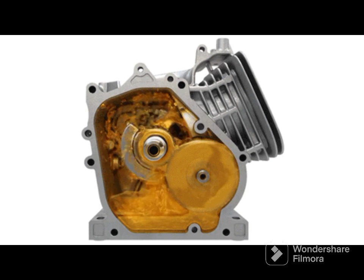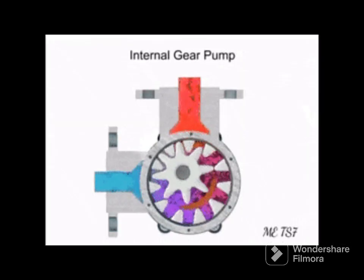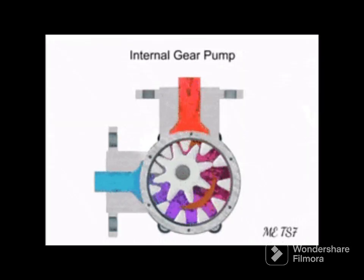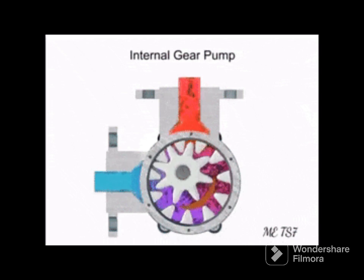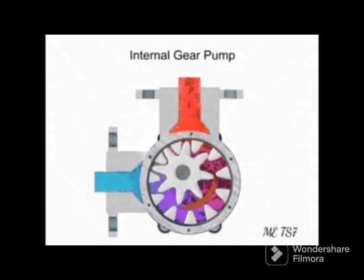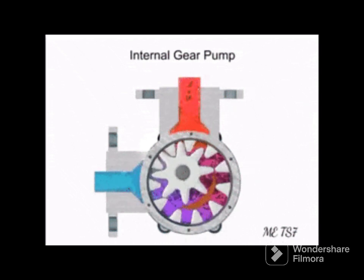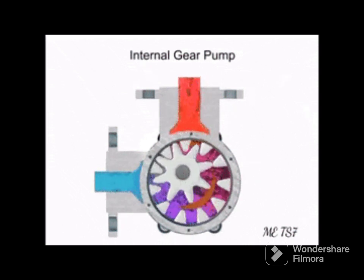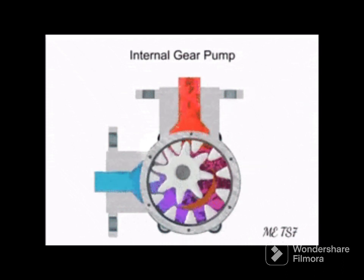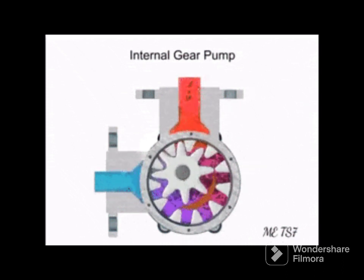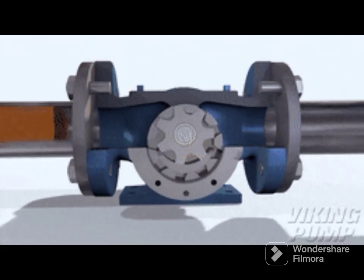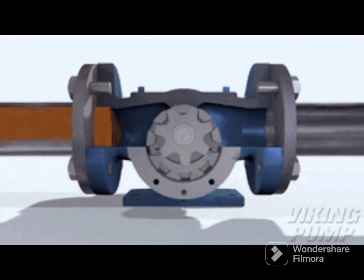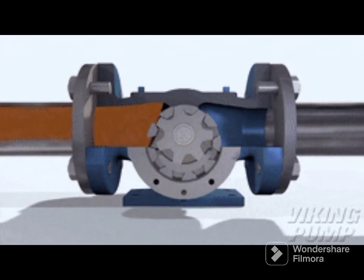Three: oil pump. The oil pump is an internal combustion engine part that circulates engine oil under pressure to the rotating bearings, the sliding pistons, and the camshaft of the engine. This lubricates the bearings, allows the use of higher capacity fluid bearings, and also assists in cooling the engine.